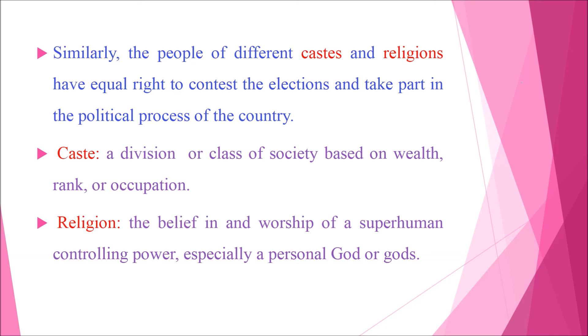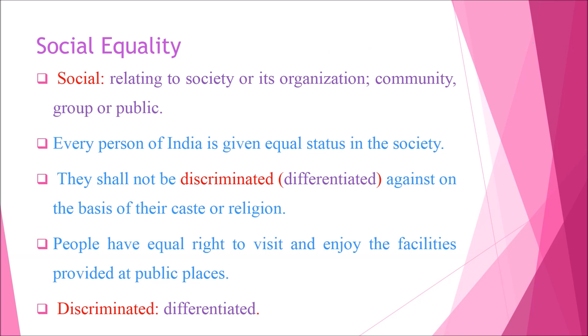Similarly, people of different castes and religions have equal right to contest elections and take part in the political process of the country. Next, we have social equality. Social means relating to society or its organization — in other words, community, group or public. Every person of India is given equal status in the society. They shall not be discriminated — discriminated means differentiated against — on the basis of their caste or religion. People have equal right to visit and enjoy the facilities provided at public places.